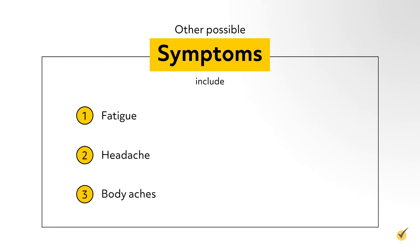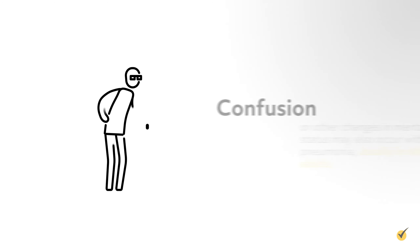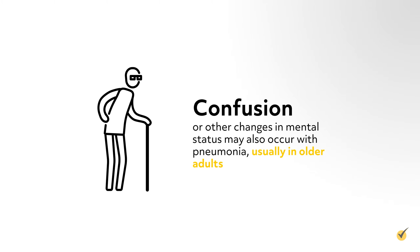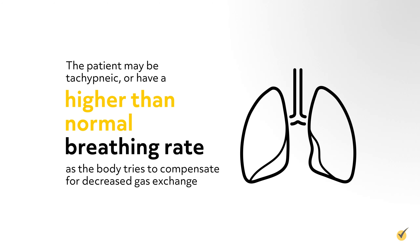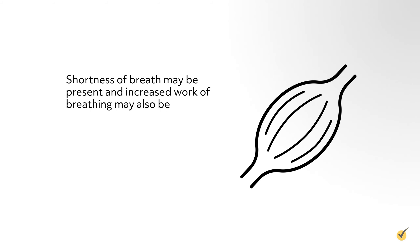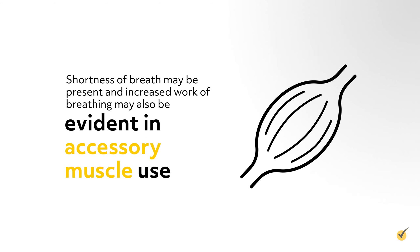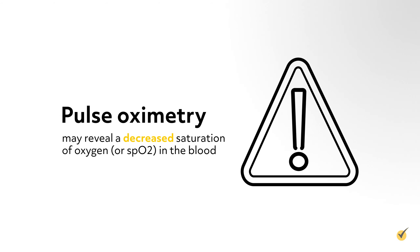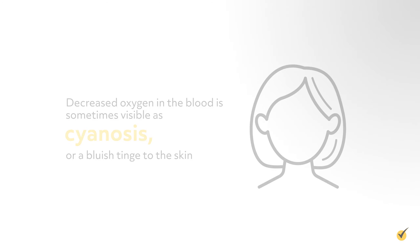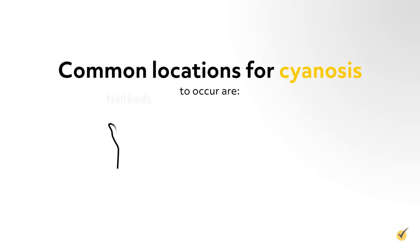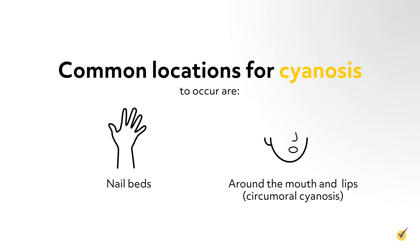Other possible symptoms include fatigue, headache, body aches, decreased appetite, nausea, and vomiting. Confusion or other changes in mental status may also occur with pneumonia, usually in older adults. The patient may be tachypneic, or have a higher than normal breathing rate, as the body tries to compensate for decreased gas exchange. Pulse oximetry may reveal a decreased saturation of oxygen, or SpO2, in the blood. Decreased oxygen in the blood is sometimes visible as cyanosis, a bluish tinge to the skin, occurring at the nail beds or around the mouth, called circumoral cyanosis.